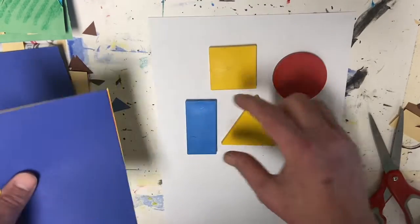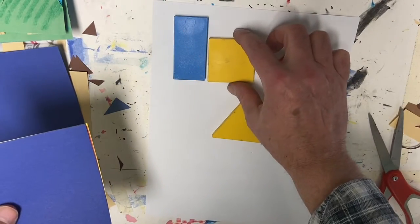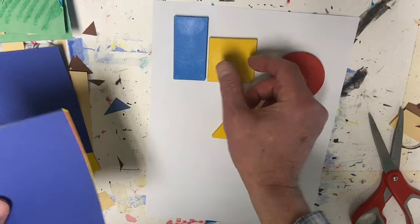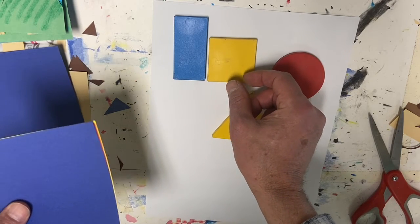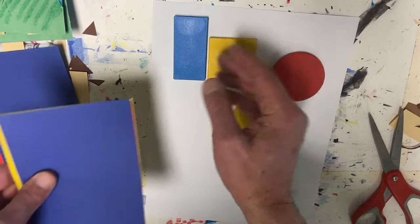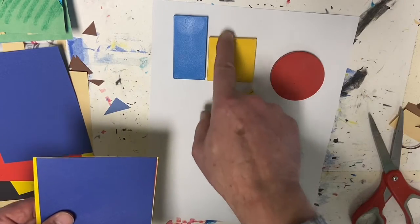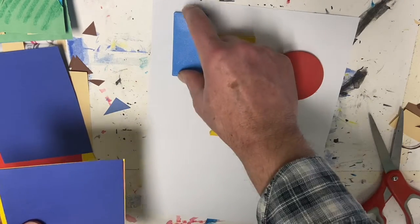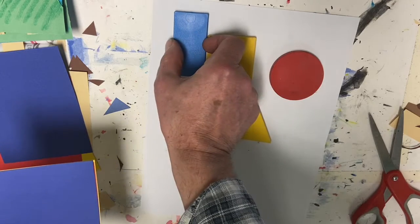So rectangles are a longer shape than a square, skinnier than a square usually, and then also not as wide as a square. And it's not equal on all sides. Two sides are equal here, two sides are equal here.